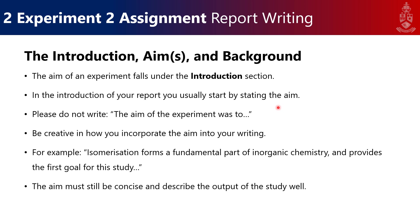You usually start with stating the aim, but do not say 'the aim of the experiment was.' Be creative. For example, write 'in this study, we will investigate...' or start with 'isomerization forms a fundamental part of inorganic chemistry and provides the first goal of this study.' It's a creative way to express the aim. Try to spread your academic wings a bit. The aim must still be concise and describe the output of what we are trying to study.